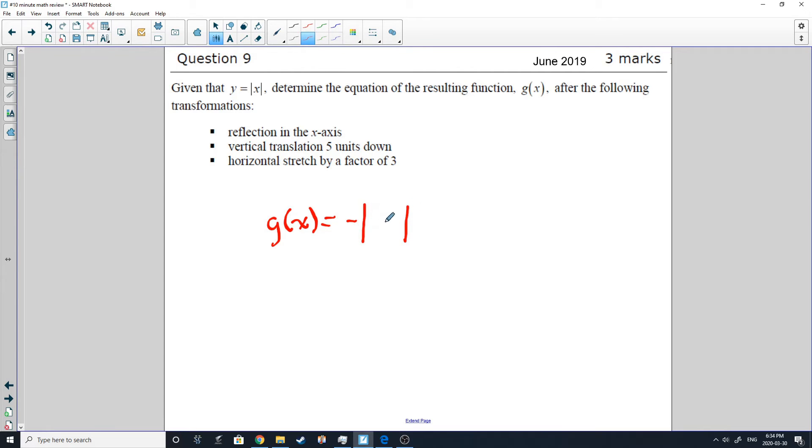We got a reflection in the X axis. So that'll be simply multiplying the absolute value by a negative sign. So we got a negative sign out there and I'm going to write an X in here. So that'll take care of the reflection in the X axis, a vertical translation of five units down. Well, that's happening to the Y value. So that'll be outside the absolute value. We'll be subtracting five. Now the tricky one here is the horizontal stretch by a factor of three. So we need to remember that if we're stretching by a factor of three in the equation, it would have been a one third because it's always the reciprocal. There you have it.